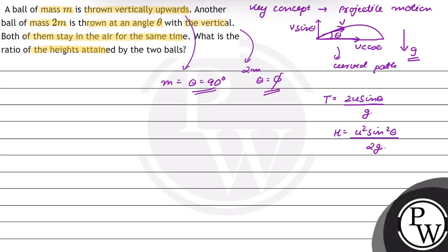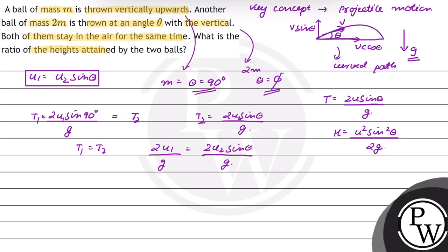Since we are given that the two time of flight is the same, T1 is equal to 2u sin 90 degree by g, which equals T2. And T2 ki value hai 2u sin theta by g. So T1 is equal to T2, and this will be equal to 2u1 by g equals 2u2 sin theta by g. Therefore, u1 is equal to u2 sin theta.